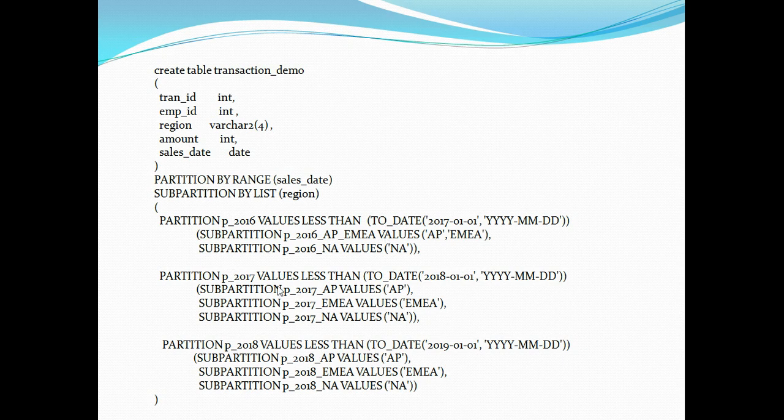Though three sub-partitions were created in this example, it's advisable to create partitions in multiples of two — like two, four, eight, or sixteen. This transaction demo table uses a composite partitioning strategy: first partitioned by range, then sub-partitioned by list.